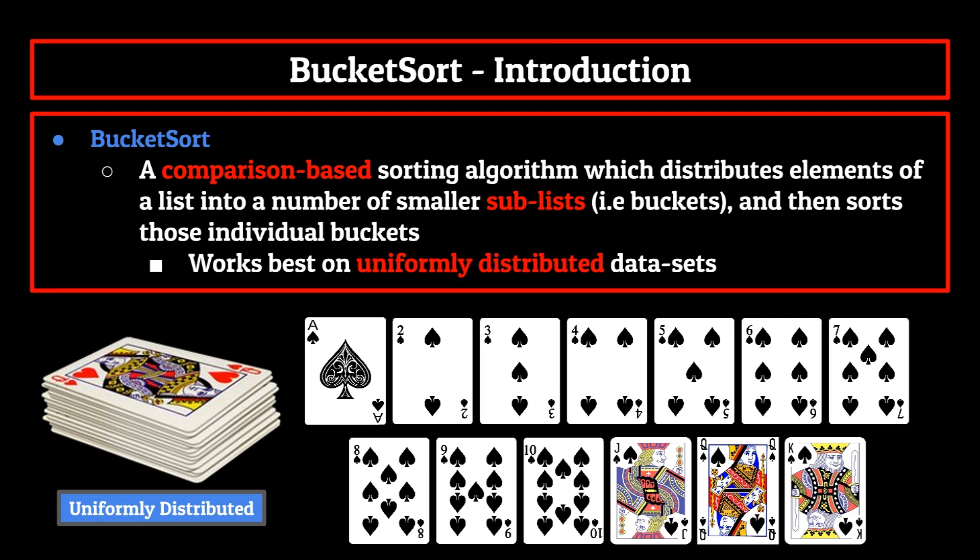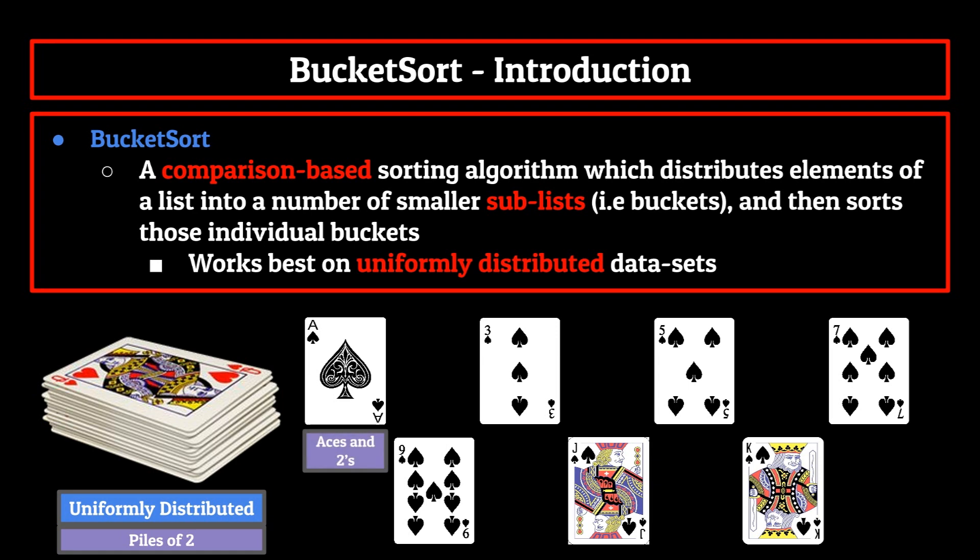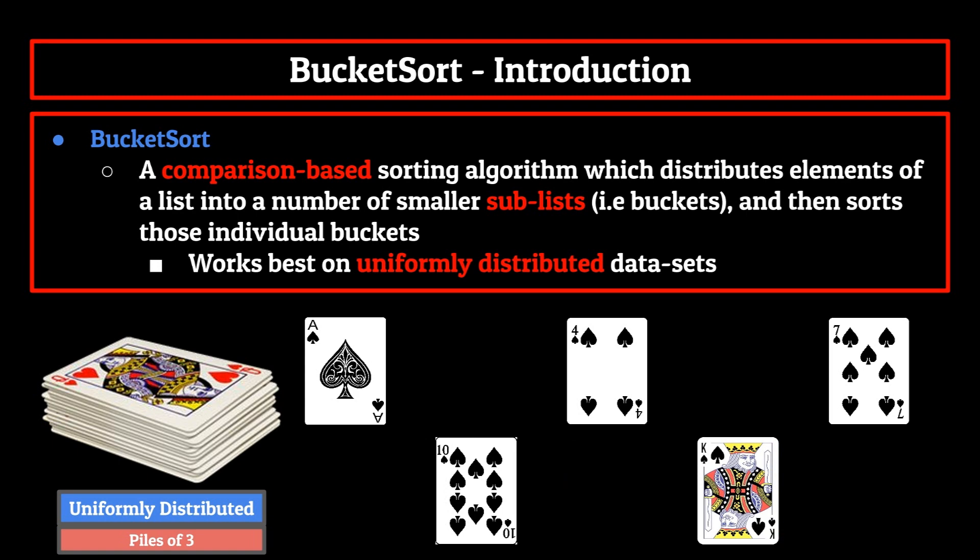Now one thing to note before we jump into pseudocode is that the number of buckets that we use is not random. In fact, it's entirely up to us as the programmer. For example, we could have had the card separated into buckets counting by twos, and the same could have been done if we wanted to separate the buckets by an ordered magnitude of three.